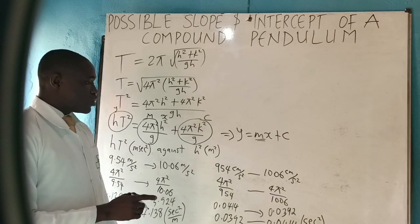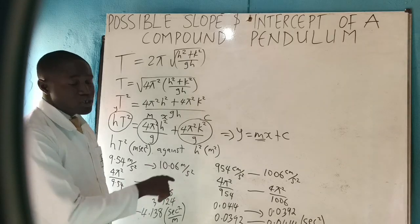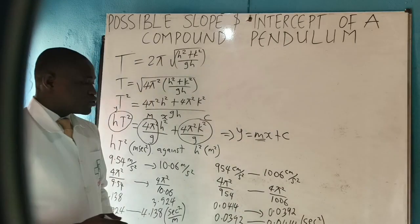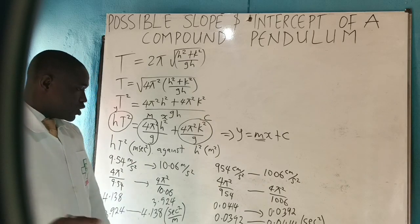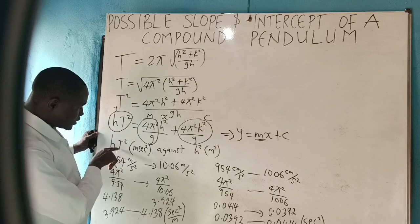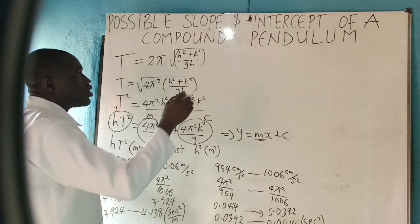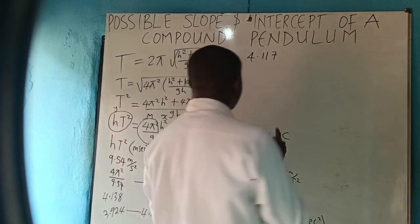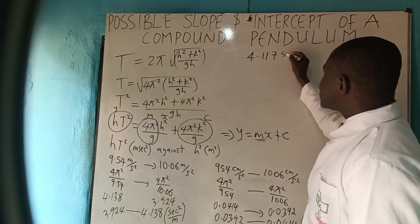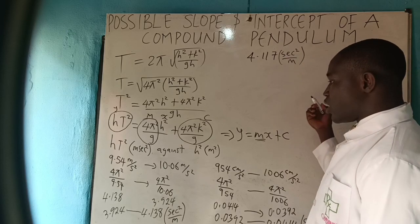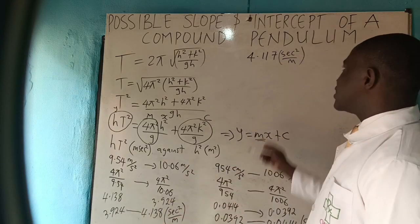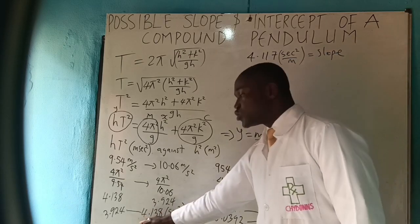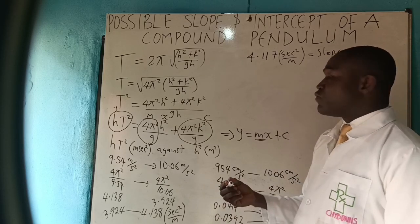Units in physics and science are very very important — always attach them. Now we have established the possible slope range. In that posted video, I plotted hT squared in meter·second squared against h squared in meter squared and got a slope of 4.117 seconds squared per meter. The question is: does 4.117 fall in the range 3.924 to 4.138? Yes it does, and that is why we said we are correct.